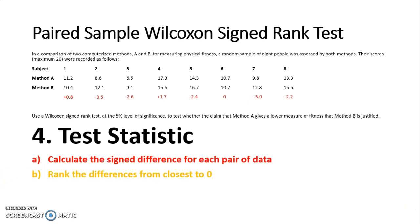Step two is to rank these differences from closest to zero to furthest away. If they have a difference of zero we can't use that, so subject six is discounted — I put an X next to them. The closest to zero is positive 0.8, so that gets rank 1. Then 1.7 is rank 2, 2.2 is rank 3, 2.4 is rank 4, 2.6 is rank 5, 3 is rank 6, and 3.5 is rank 7.